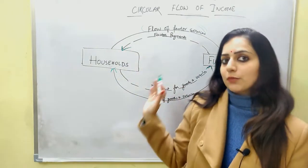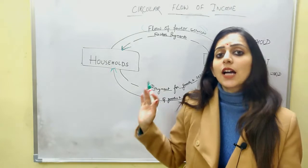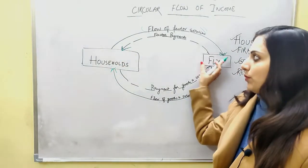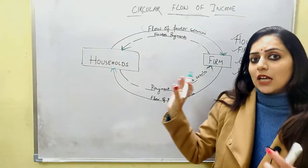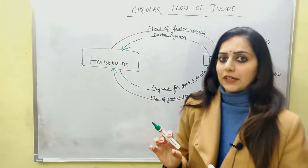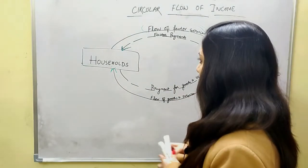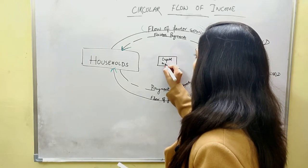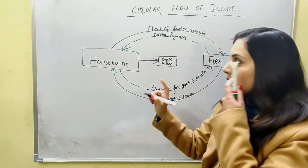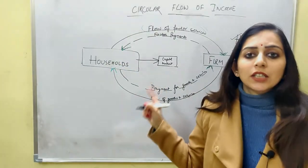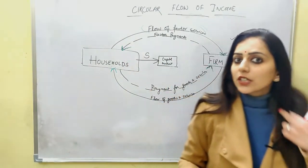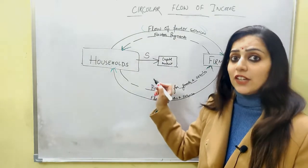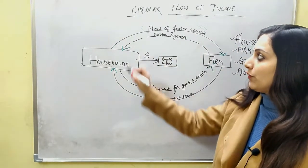If the two sector model is studied this way — without a capital market — this is a hypothetical model, because in reality this doesn't happen. In reality, households don't spend all their money and hand it to the firm for goods and services, and firms don't distribute all their income as factor payments. In reality, we also have a capital market, also called the financial market — which includes banks and financial institutions. Their role is that we households, out of whatever we earn, save a certain portion. The remaining portion we spend on payment of goods and services, but some portion we save — and that saved portion flows out of these real and money flows.